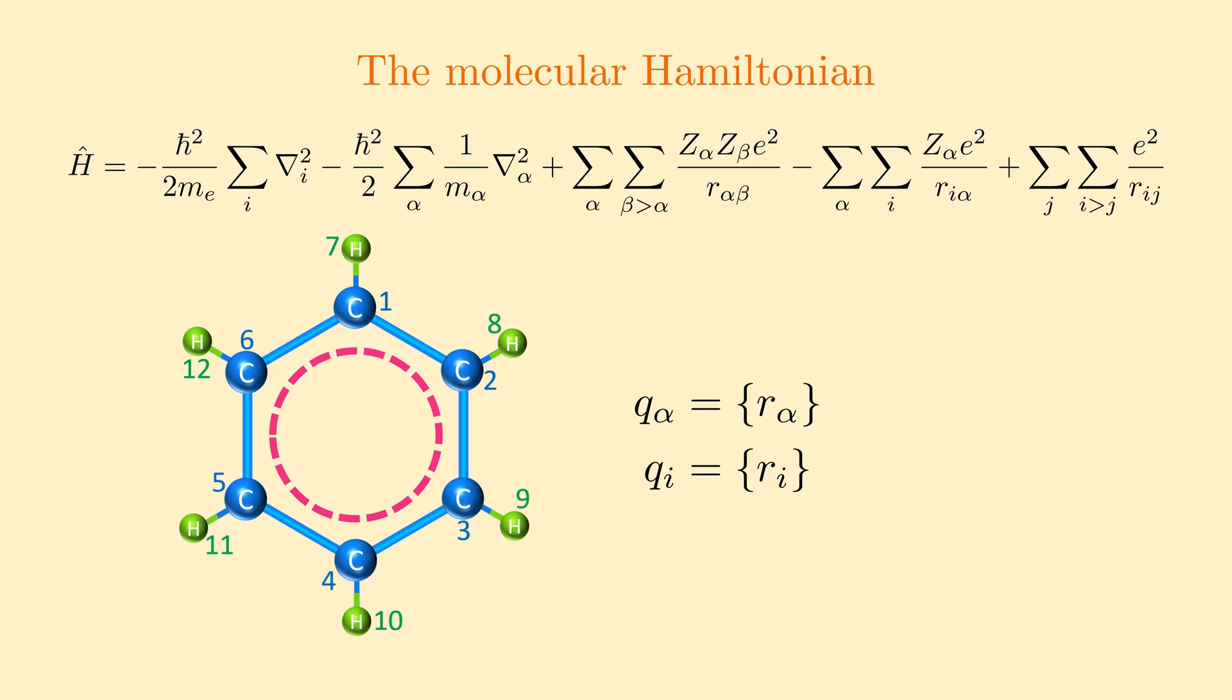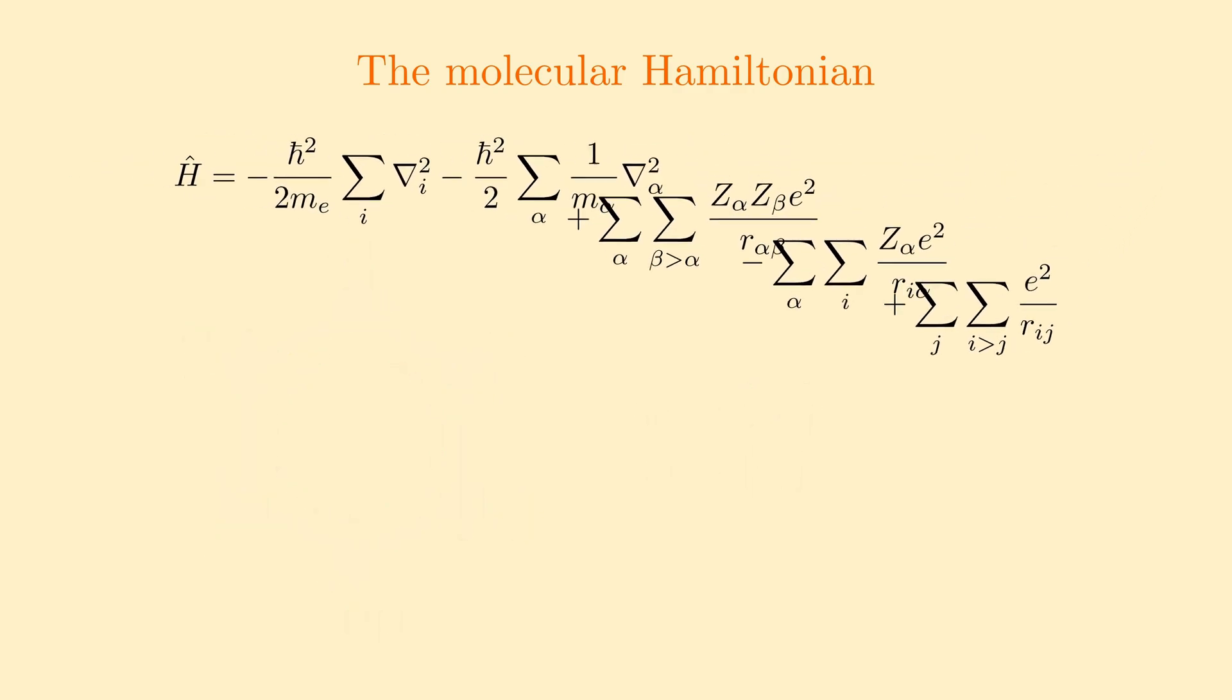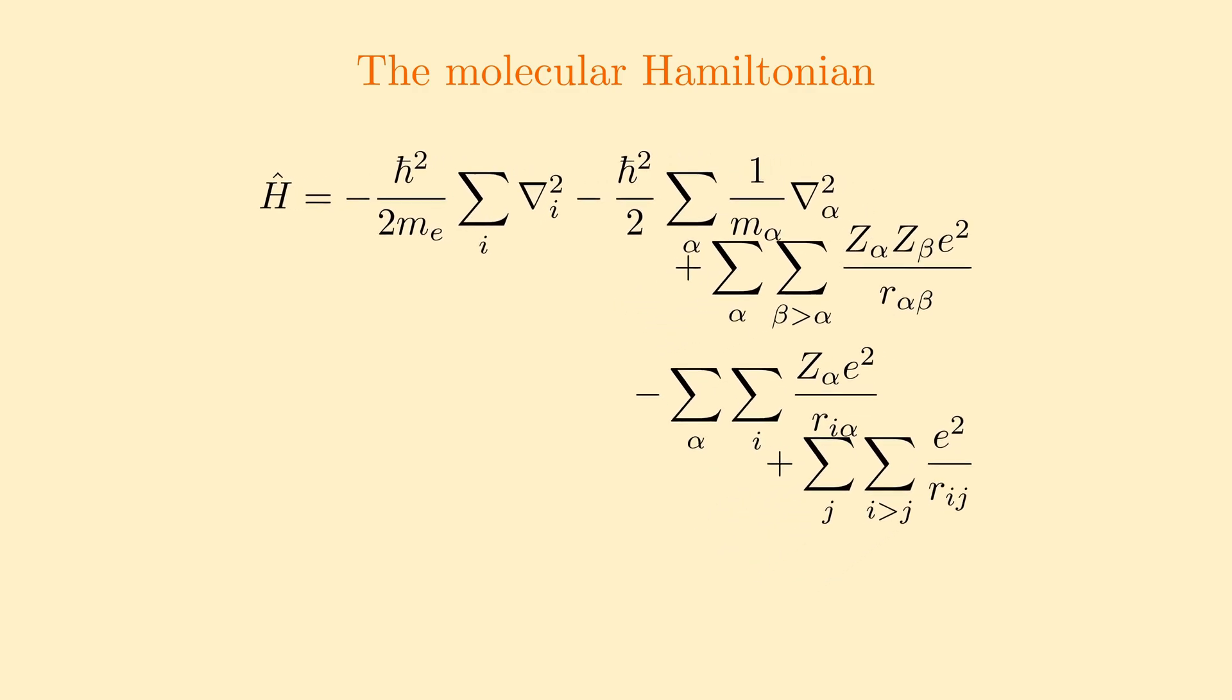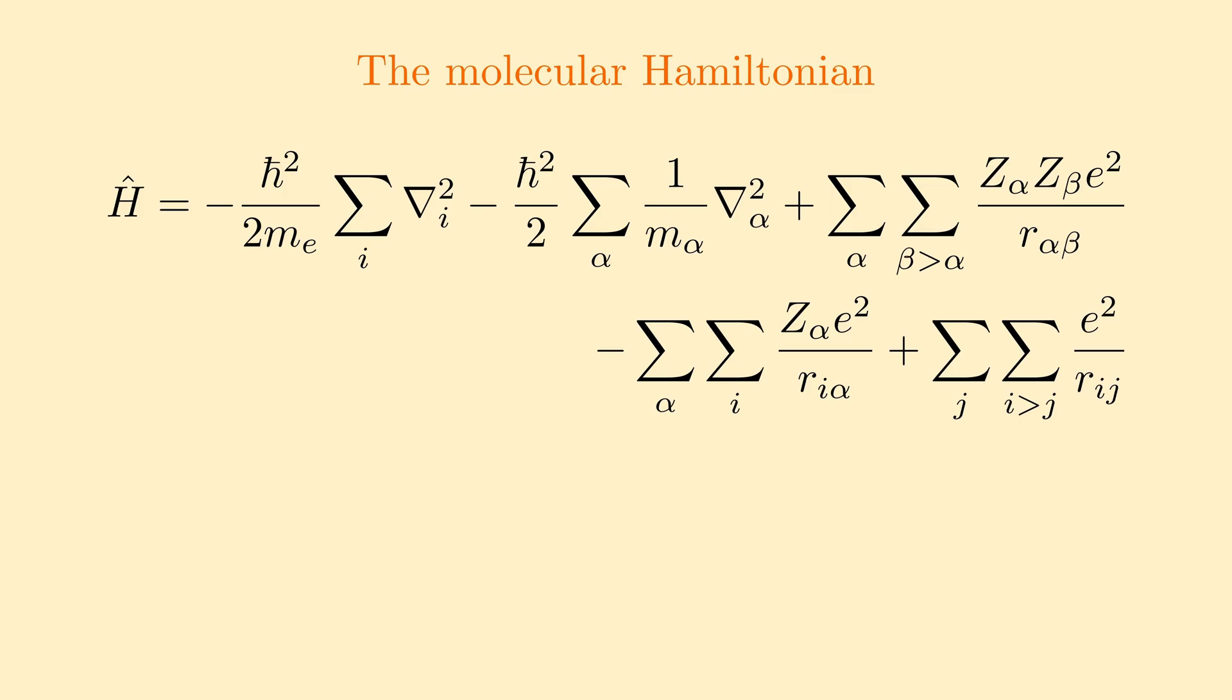We denote the set of nuclear coordinates by Q-alpha and that of the electronic coordinates by Q-i. The first and second terms in the Hamiltonian are the operators for kinetic energies of the electrons and the nuclei. The third, fourth and fifth terms are respectively the potential energies of the internuclear repulsion, electron nuclei attraction and inter-electron repulsion. The wave functions and energies of the molecules can be found by solving the molecular Schrodinger equation.